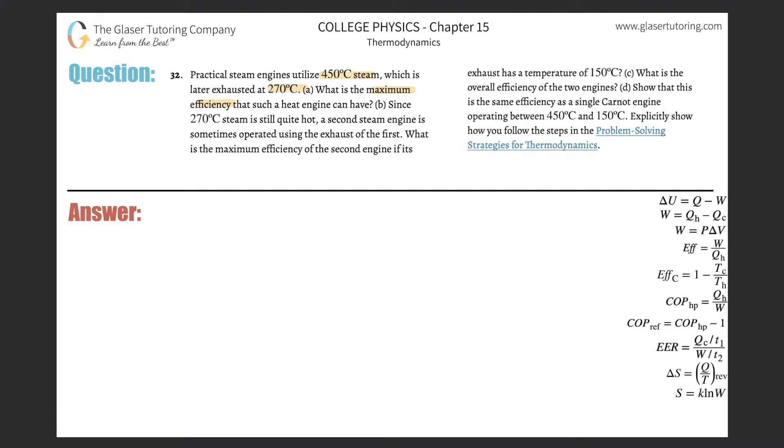All right. So basically, when they say it exhausted heat here, or I should say exhausted steam at a certain temperature, this would be like the temperature of the cold reservoir. And this would be like the temperature of the hot reservoir then, what the steam engine is utilizing.